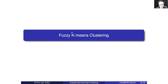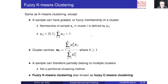Now we are going to extend from K-mean clustering to fuzzy K-mean clustering. The idea is the same as K-mean clustering — we would like to divide the samples into different clusters. But the idea is that we are going to introduce the grade. Corresponding to each sample, we have a grade. We call this the fuzzy membership of a cluster.